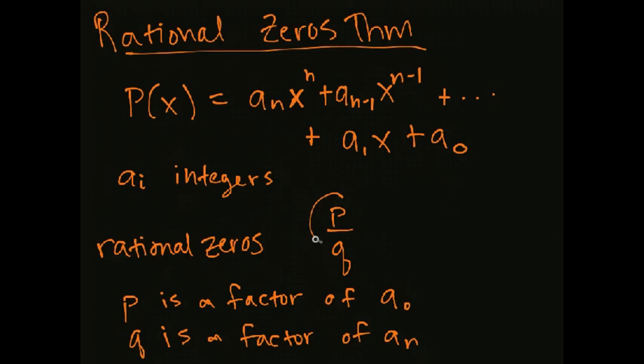So p has to do with a_0 and q has to do with a_n. These are just all possible zeros. It doesn't mean that everything of this form is a zero. We're going to use synthetic division to test them to find if they're actually zeros. These could be integers or they could be fractions.